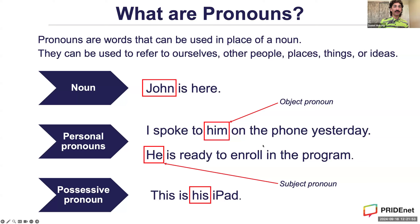A bulk of the conversation today is going to be talking about proper use of pronouns and then moving into gender-inclusive language. So just to start with the foundations of what pronouns are — essentially we could think about pronouns in three different ways. Pronouns can be used in place of a noun. We can refer to ourselves, to other people, places, or things. So the examples on screen: for a noun, 'John is here.' Or personal pronouns, for example, 'I spoke to him on the phone yesterday. He is ready to enroll in the program.' Or possessive pronouns — for example, 'this is his iPad.'